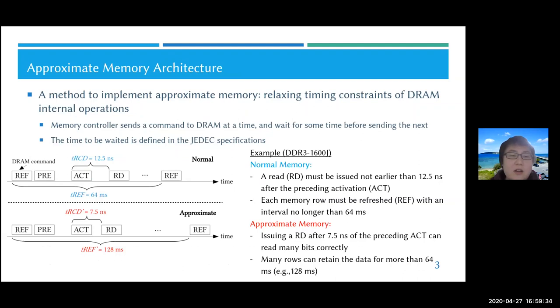One of the methods to implement this approximate memory is to relax timing constraints of DRAM internal operations. A memory controller, which is embedded in the CPU today, sends a command to DRAM at a time. Before sending the next command, it has to wait for some amount of time specified in the JEDEC specification. The amount of time you have to wait is called a timing constraint.